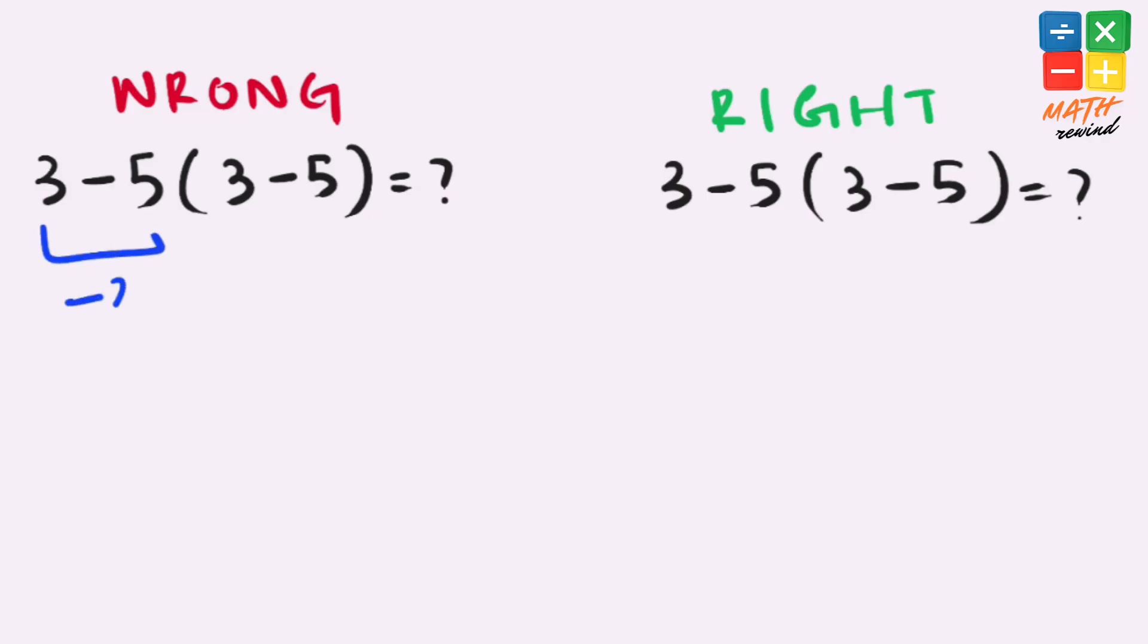3 minus 5 equals minus 2, and 3 minus 5 equals minus 2. Minus 2 times minus 2 equals positive 4. But this answer is not right, because according to the order of operations, we must solve parenthesis, then exponents, then multiplication and division, and finally addition and subtraction.